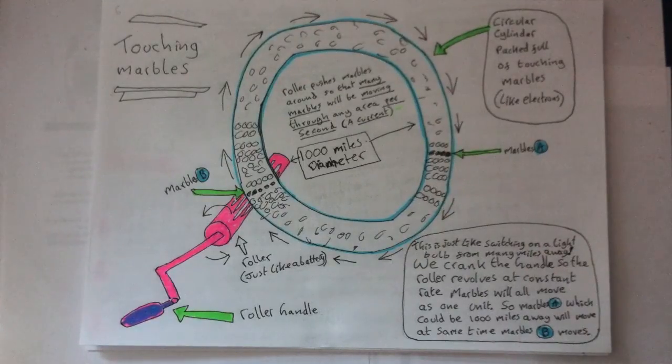So let's say then that a marble is moved by the roller out through the plus side, for example a positive charge leaves the positive terminal. Now, since all marbles are touching, that means a marble will at almost the same moment in time enter the minus side of the roller, for example a different positive charge at the other end will enter the minus terminal.